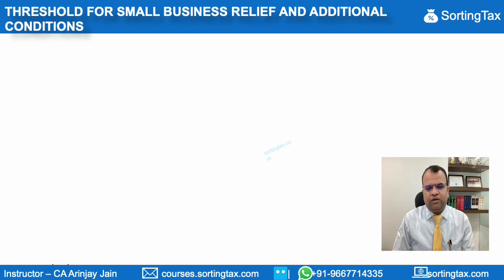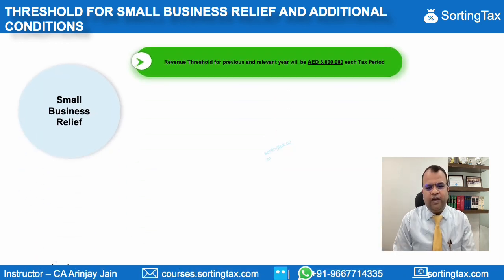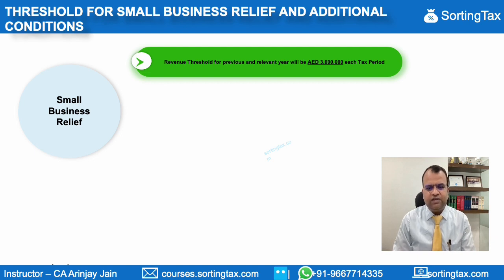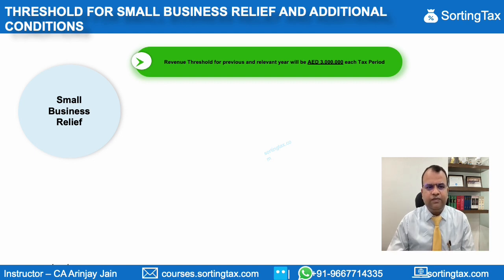What is the threshold in order to qualify as a small business? To qualify as a small business, the revenue threshold is AED 3 million for each tax period. So if your business has a revenue of less than 3 million, you will qualify as a small business. But this threshold has to be met for both the previous year and the relevant year.